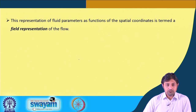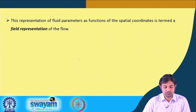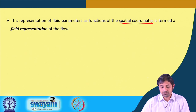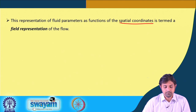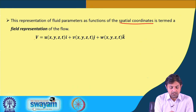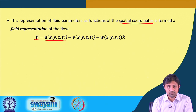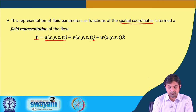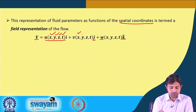This representation of fluid parameters as a function of spatial coordinates is termed the field representation of the flow — with respect to space, that is in terms of x, y, and z. For example, the velocity can be written as u·i + v·j + w·k, where each of u, v, and w can be a function of x, y, z, and t.